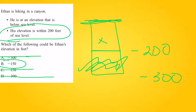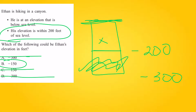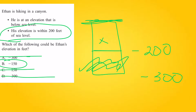Let's read this problem. Ethan is hiking in a canyon. He's at an elevation that is below sea level. His elevation is within 200 feet of sea level. Which of the following could be Ethan's elevation in feet?